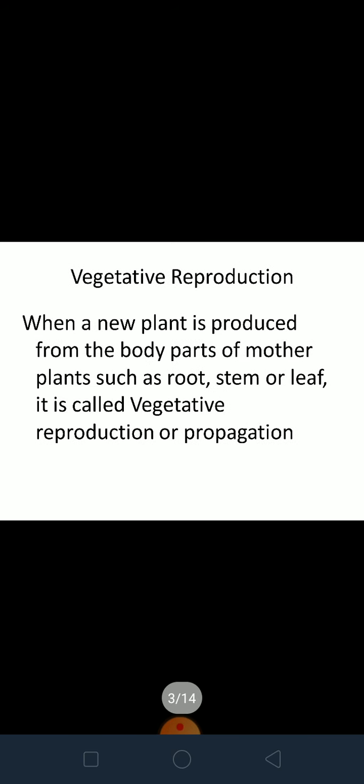Today's topic is vegetative reproduction, also called vegetative propagation — both terms mean the same thing. When a new plant is produced from the body of the mother plant or the parent plant, this is called vegetative reproduction. The body part from which a new plant is produced could be a root, stem, or a leaf.